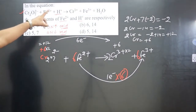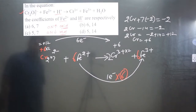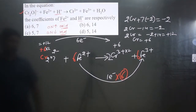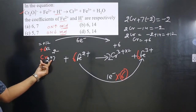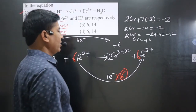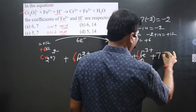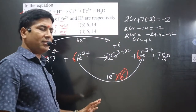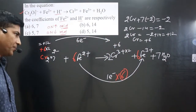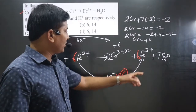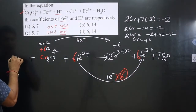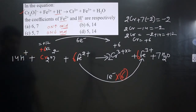Since the equation is balanced in acidic medium, H+ is present. Now we balance oxygen: there are 7 oxygen atoms, so we add 7 water molecules to the other side. The oxygen atoms are now balanced. For hydrogen, 7 × 2 gives 14 hydrogen atoms, so we add 14 H+ on the left side. The equation is completely balanced.